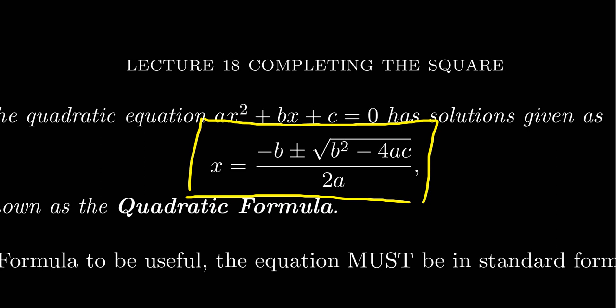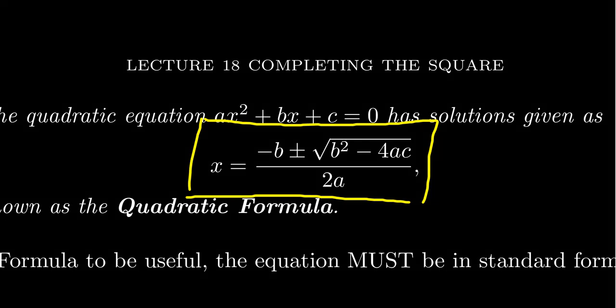In the previous video, we saw this quadratic formula: x equals negative b plus or minus the square root of b squared minus 4ac, all over 2a. We saw that by completing the square on a generic quadratic equation, we are able to solve every quadratic equation, and we can do that with the quadratic formula.